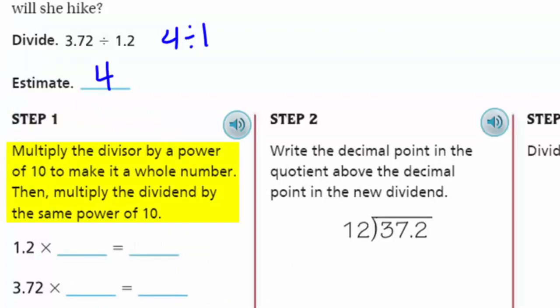So step one. It says multiply the divisor by a power of 10 to make it a whole number. And then multiply the dividend by the same power of 10. So in this case here, multiply by a power of 10. If we multiply that by a power of 10, we remove the decimal, which is kind of nice because the decimal always moves to the right when we multiply it by a power of 10. And then we have 3 and 72 hundredths. We're going to multiply that by a power of 10, and we're going to end up with 37 and 2 tenths.